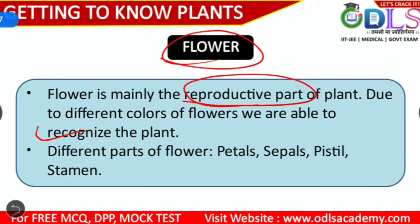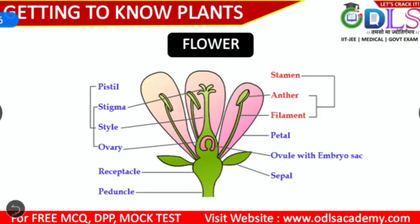Now let's look at the different parts of flowers. Flowers have many parts: colored parts, petals, sepals, pistil, and stamen. About all these parts, I will show you in a diagram. This tubular structure here is the stamen, and this middle part is what we commonly call the pistil. We will study all of these in detail.